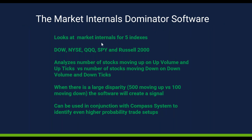The Dominator system looks at five different indexes: the Dow, the New York Stock Exchange, the QQQs/Nasdaq, the S&P 500/SPY, and the Russell 2000. It looks across each index at stocks going up on up volume and upticks versus stocks going down on down volume and downticks across each index. It then looks at all of those together to determine if there's enough discrepancy to generate a buy or sell signal. When that happens I check the Compass System for institutional confirmation - it's basically a checklist - and then I just dig deeper to find the best entry.